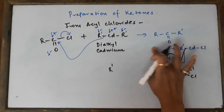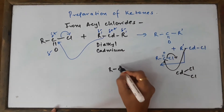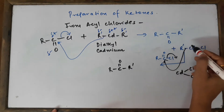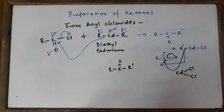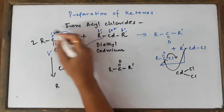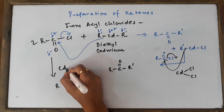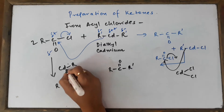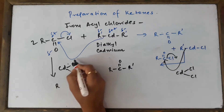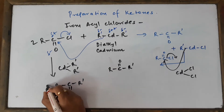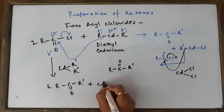We get R-C(=O)-R'. In the exam, I'll directly show the step: two molecules of acyl chloride react with dialkyl cadmium, written as CdR'₂. We get R-CO-R' (two times) plus CdCl₂.